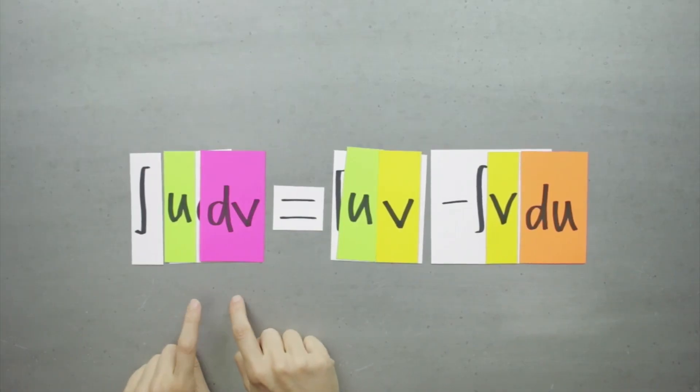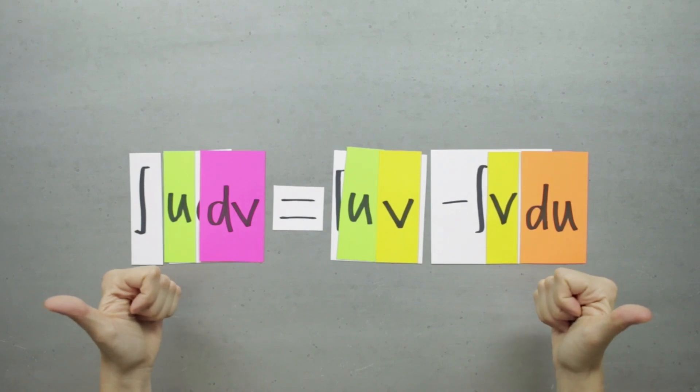If we look at the formula, what we're literally doing is changing the integrand from u and the derivative of v to v and the derivative of u. Well, if the integral on the right happens to be easier to evaluate than the integral on the left, then integration by parts is a super helpful tool.